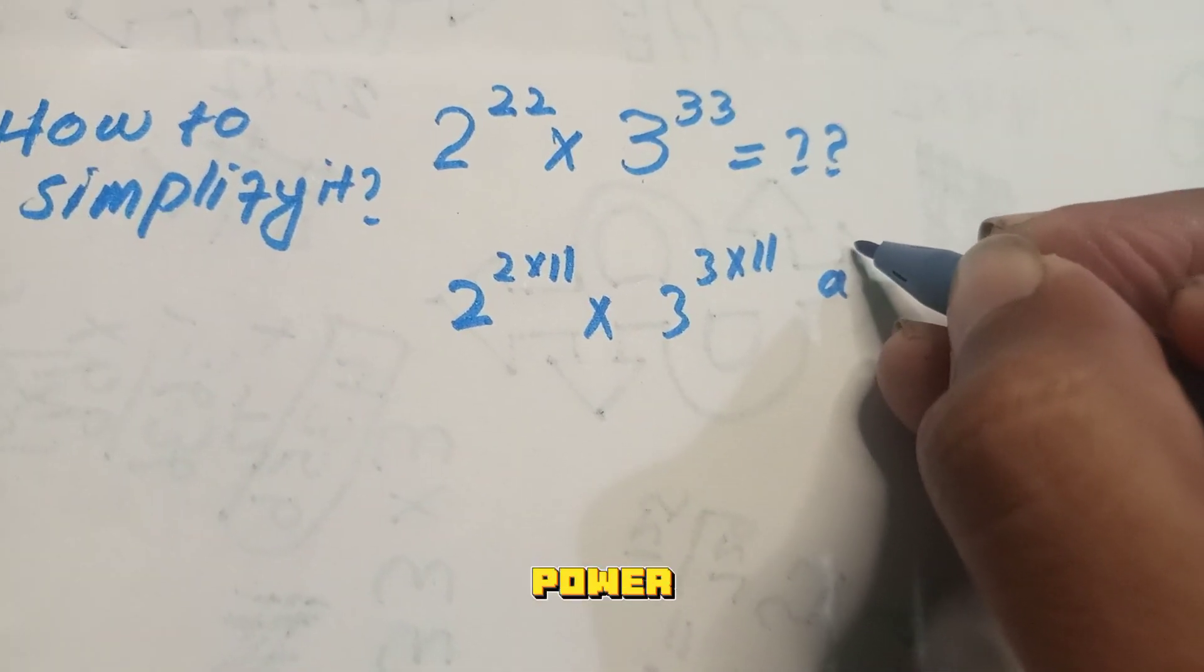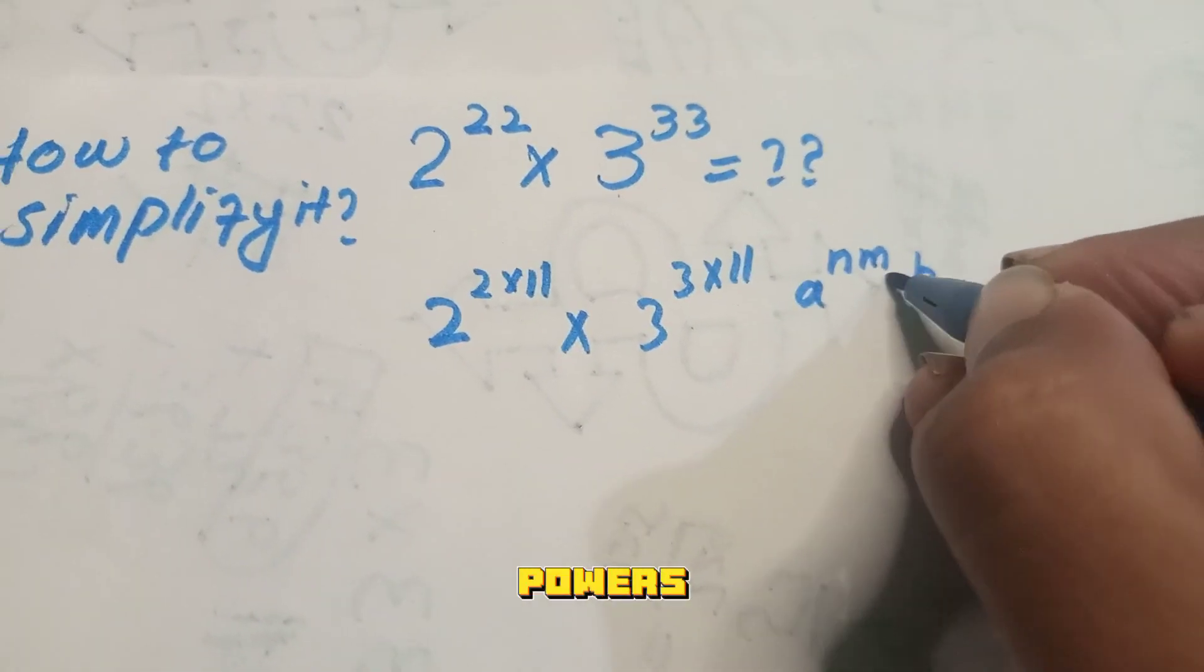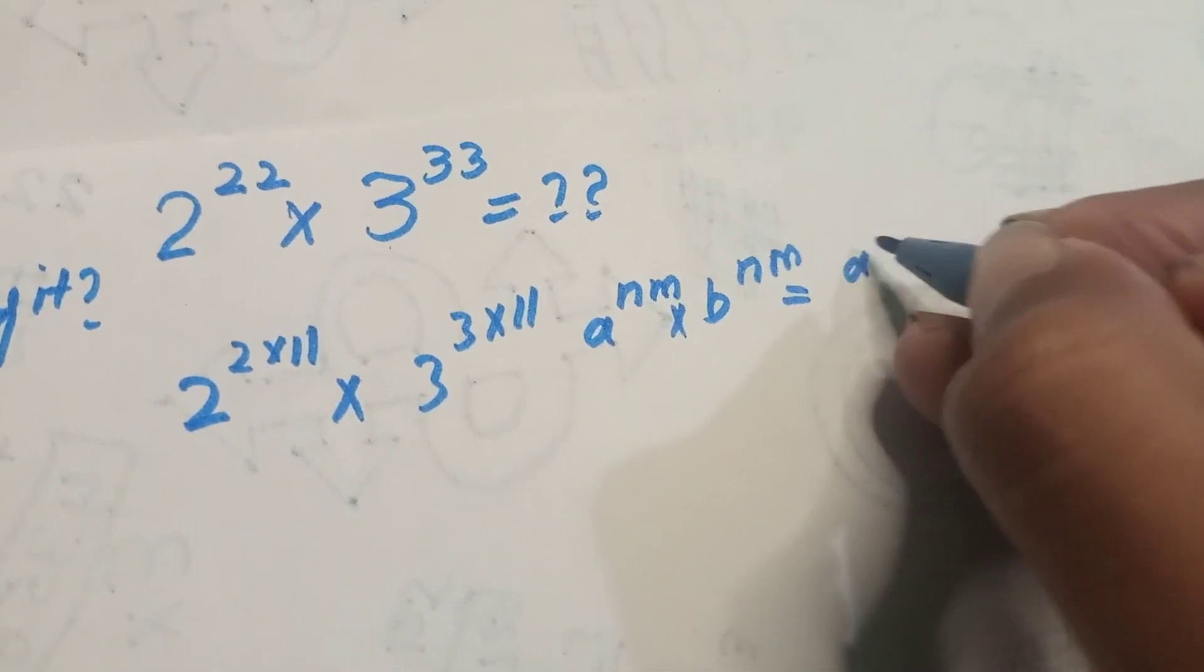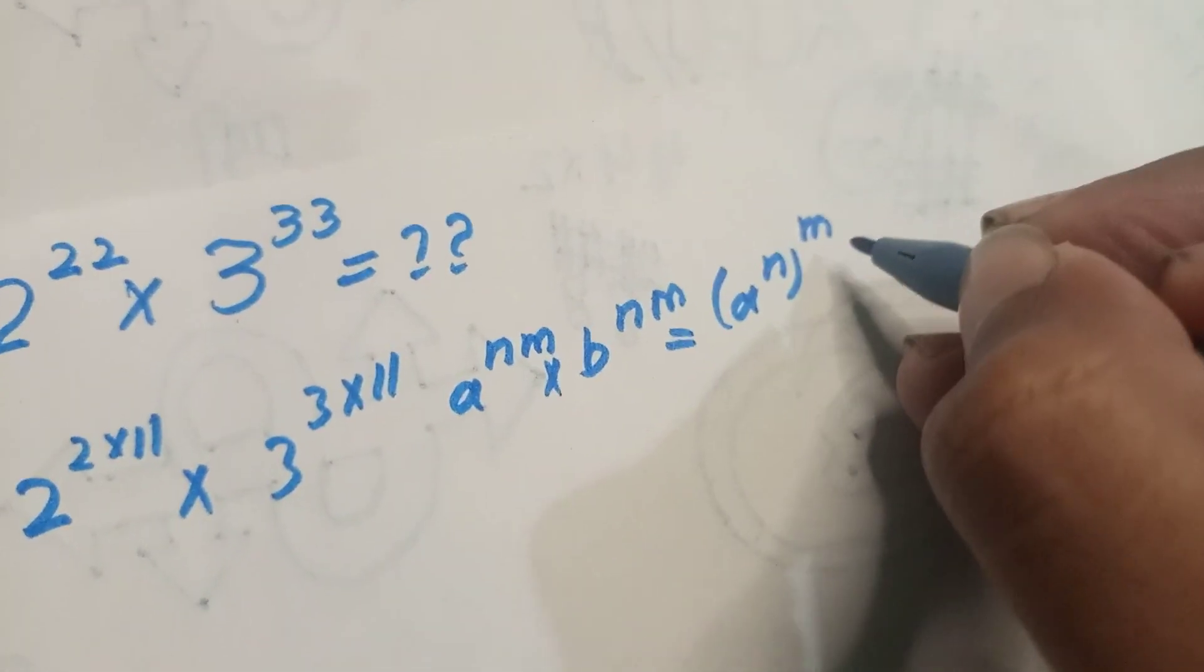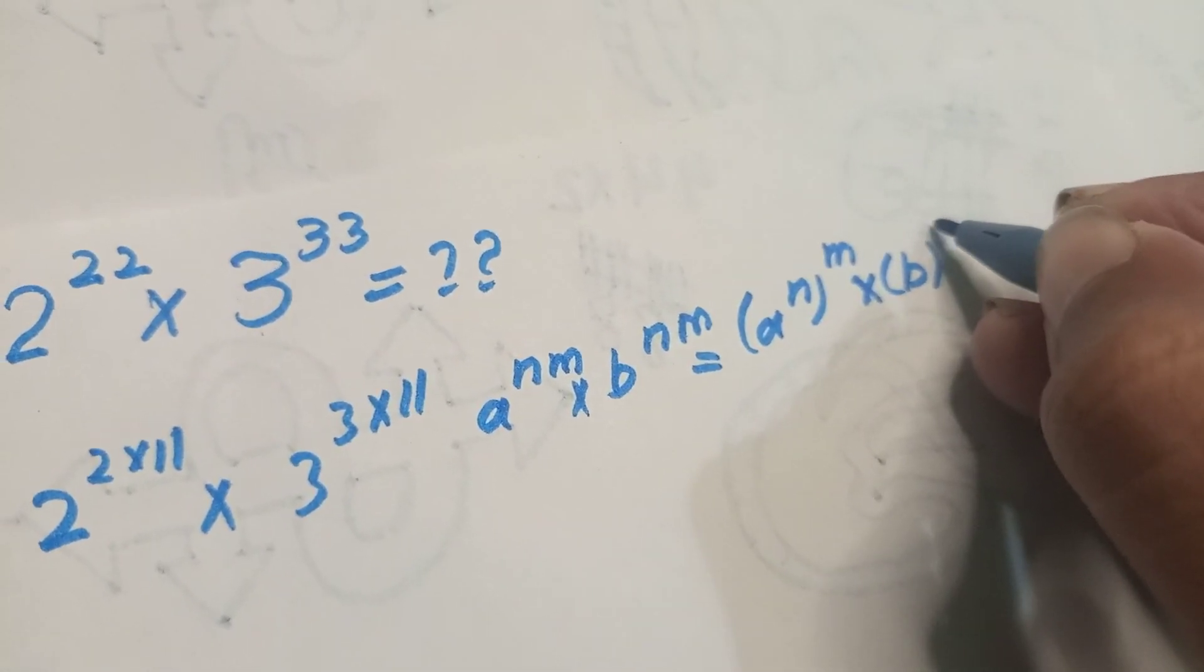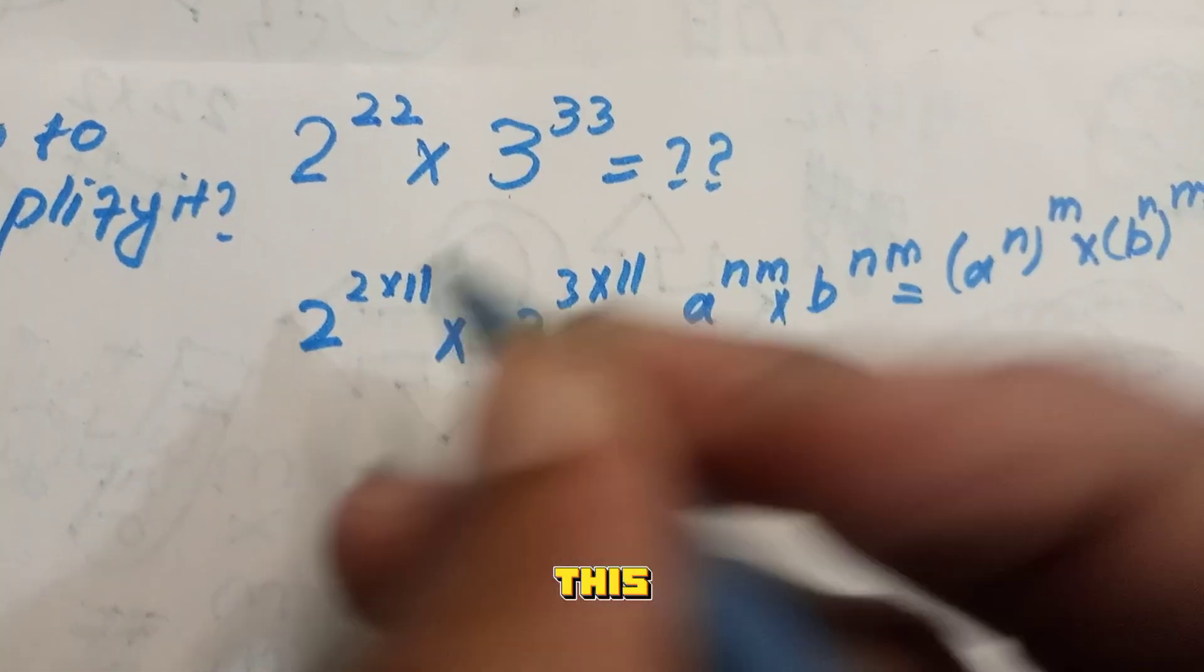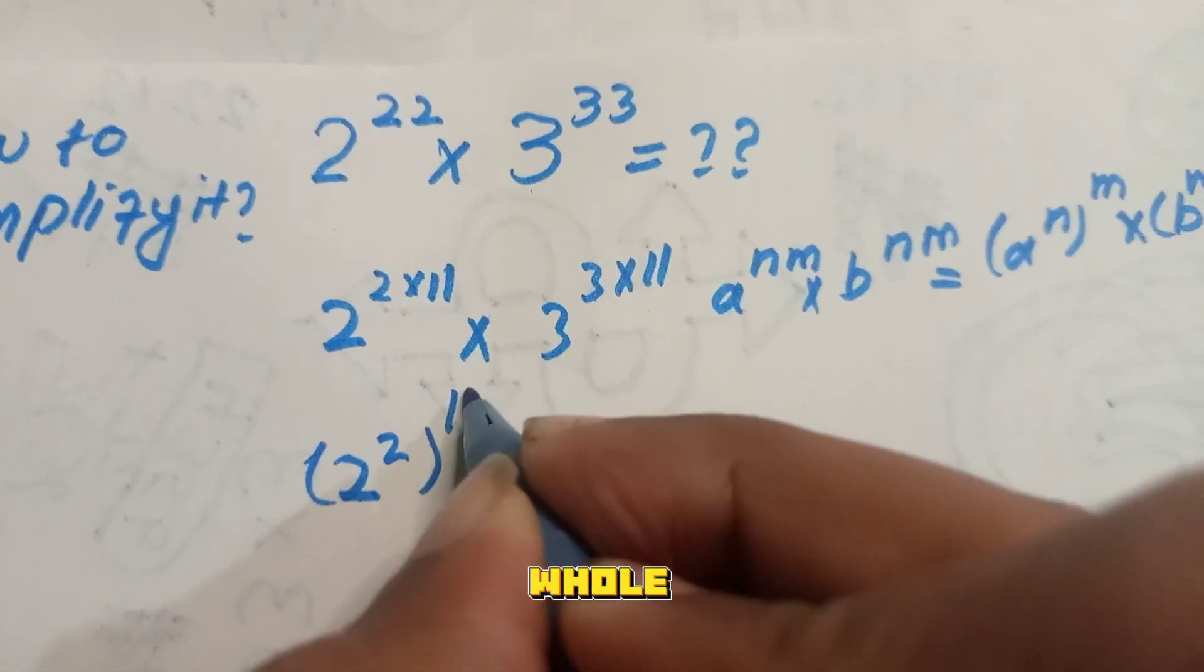The exponential equation is a^n power m and b^n power m is equal to a^n whole power m times b^n whole power m. According to this equation, we write this 2² whole power 11.